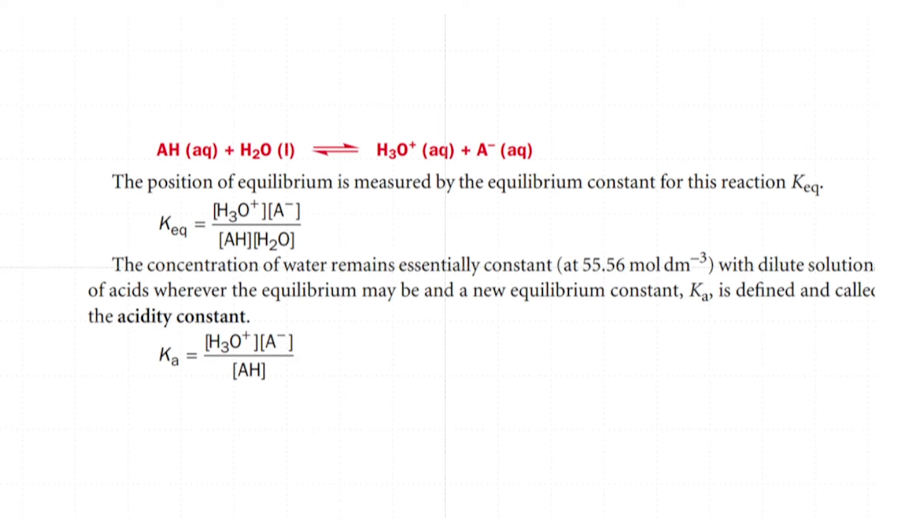The water concentration here is so large, it is 55.56 molar and in very dilute solutions, this concentration is not going to change. Therefore, this concentration of water is more or less a constant. So we define a new constant which is known as the acidity constant Ka which is nothing but the concentration of H3O+ multiplied by concentration of A- divided by the concentration of the acid.